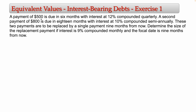We know the value of the debt but not exactly how much we are going to pay. Since the debt has interest, if we are paying late we are going to pay more than $500. There is a second payment of $800 due in 18 months with interest at 10% compounded semi-annually. Again, you have a debt with a scheduled payment date — you are going to pay more than $800.